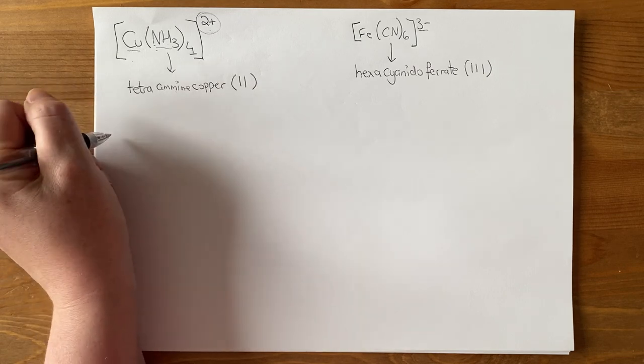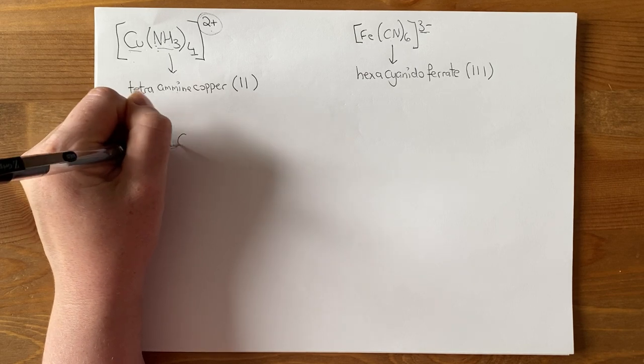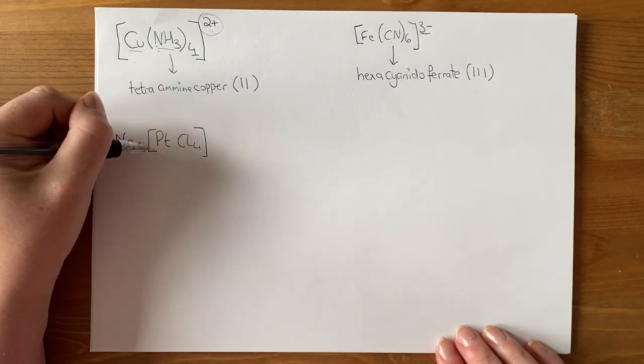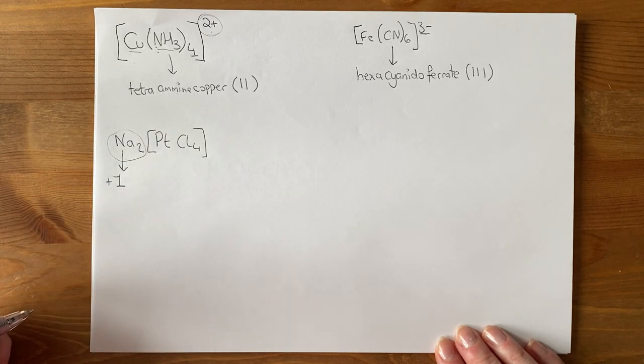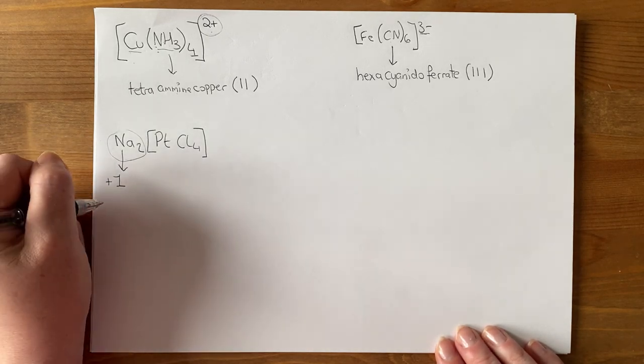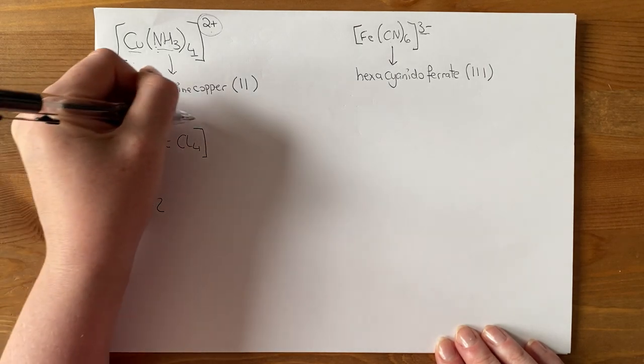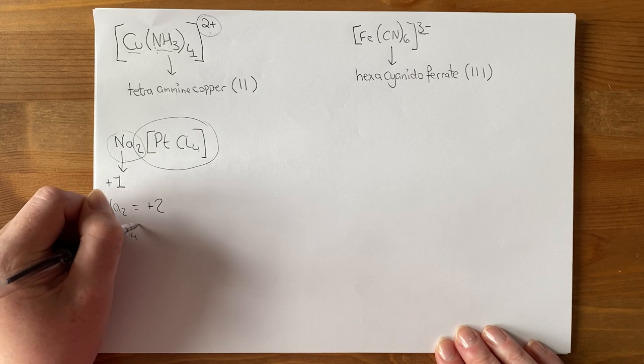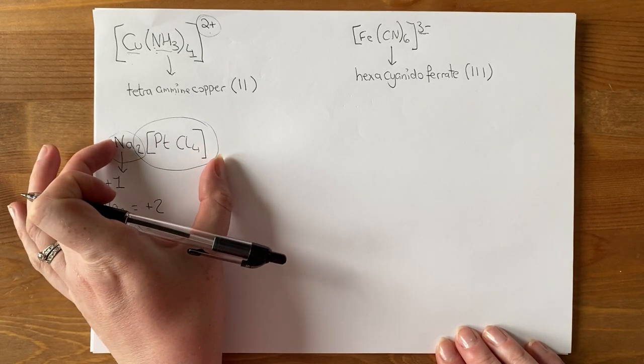Now let's have a look with one that has a counter ion Na2. Here's a complex with a counter ion. I don't see any charges just now. Sodium itself. Each one of these has a plus 1 oxidation number. We know that sodium is always plus. So Na2 must equal plus 2. This has to balance that. So my platinum tetrachloride must be minus 2 because this whole thing is neutral.